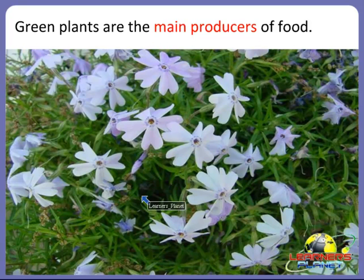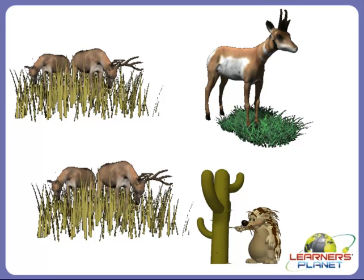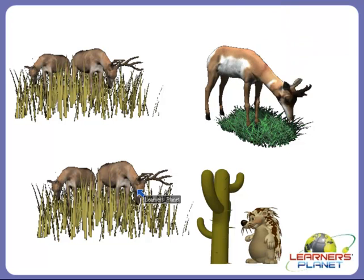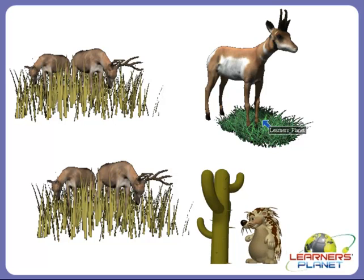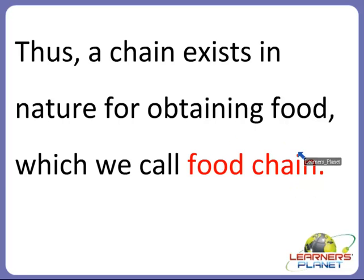Animals depend upon these plants for their food. Thus, a chain exists in nature for obtaining food, which we call a food chain. Green plants are the main producers and animals depend upon these plants for their food. So a chain exists in nature between plants and animals for obtaining food — the food chain.